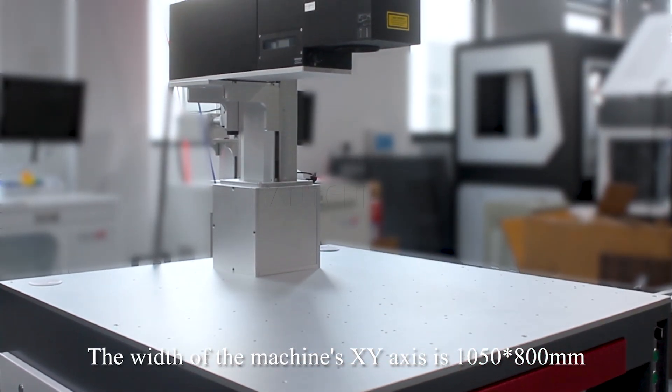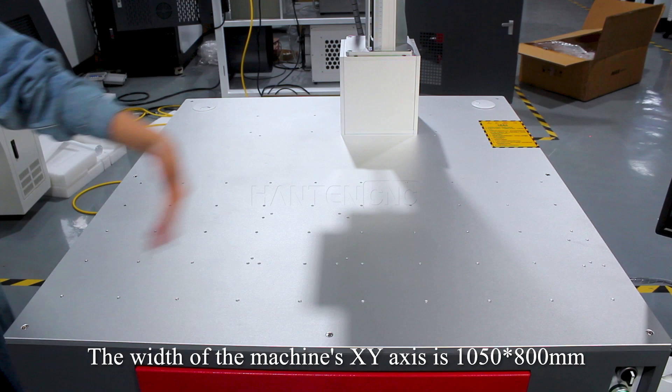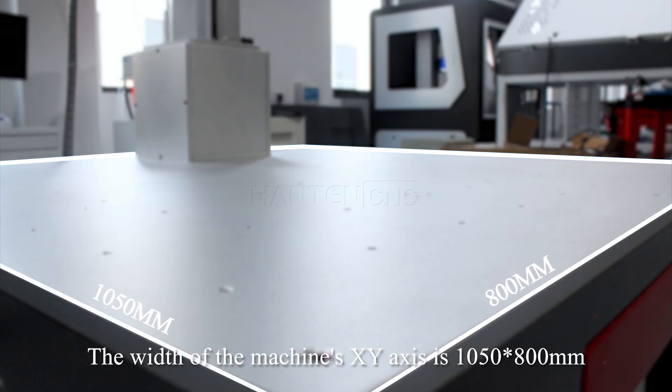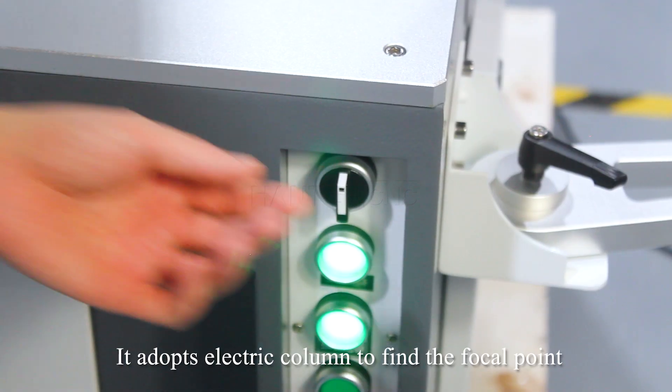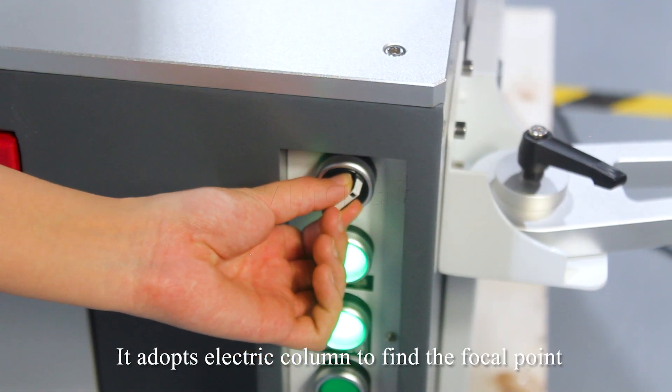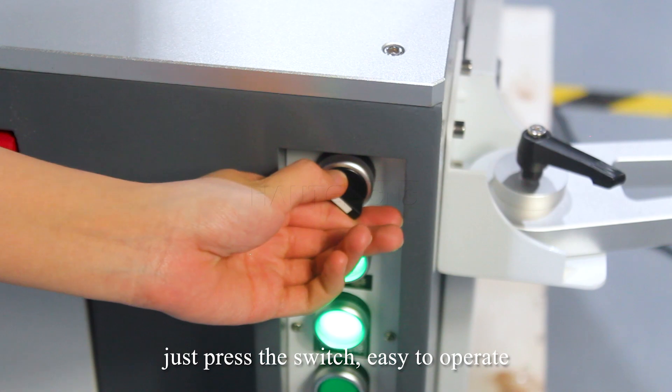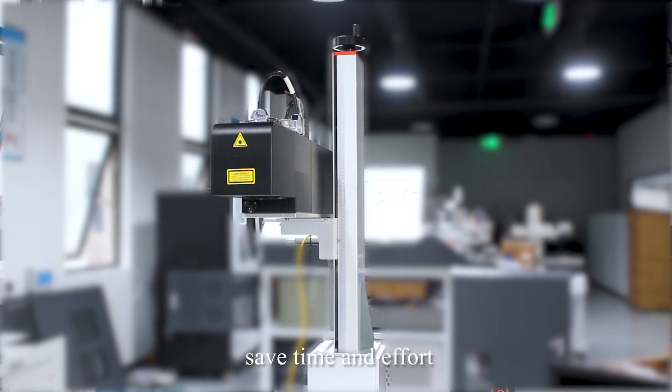The machine's X-Y axis is 1015 by 800 millimeters. It adopts an electric column to find the focal point, just press the switch, easy to operate, saves time and effort.